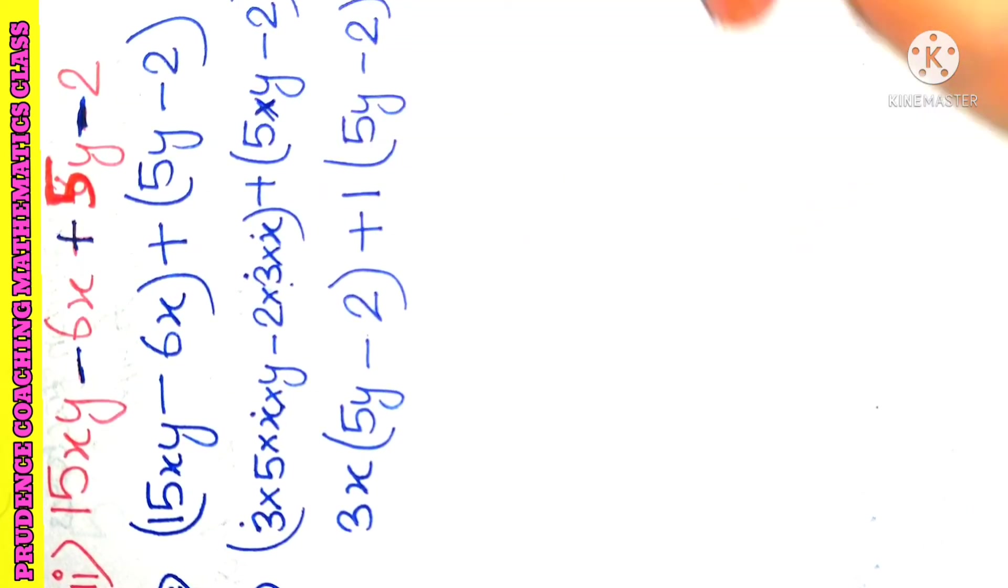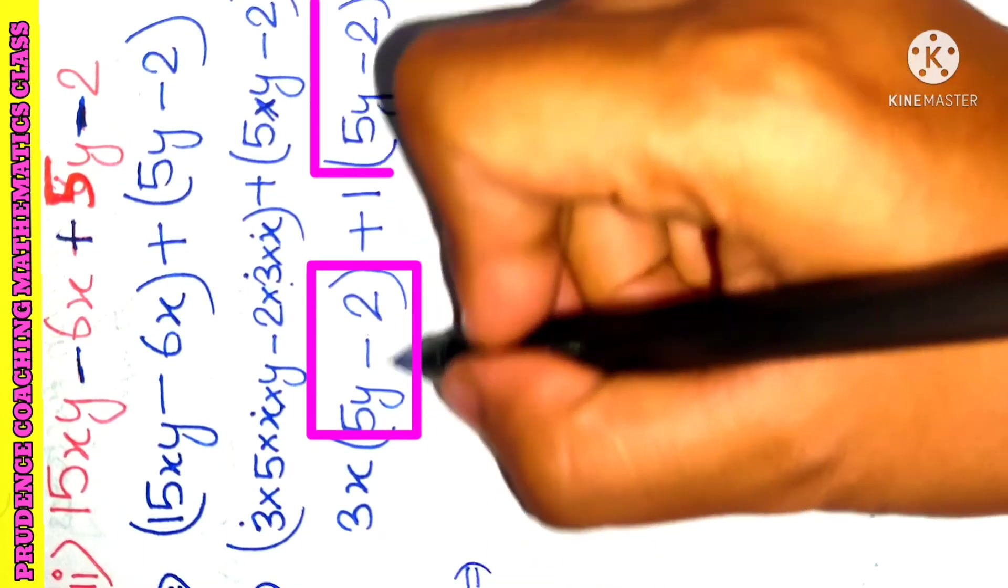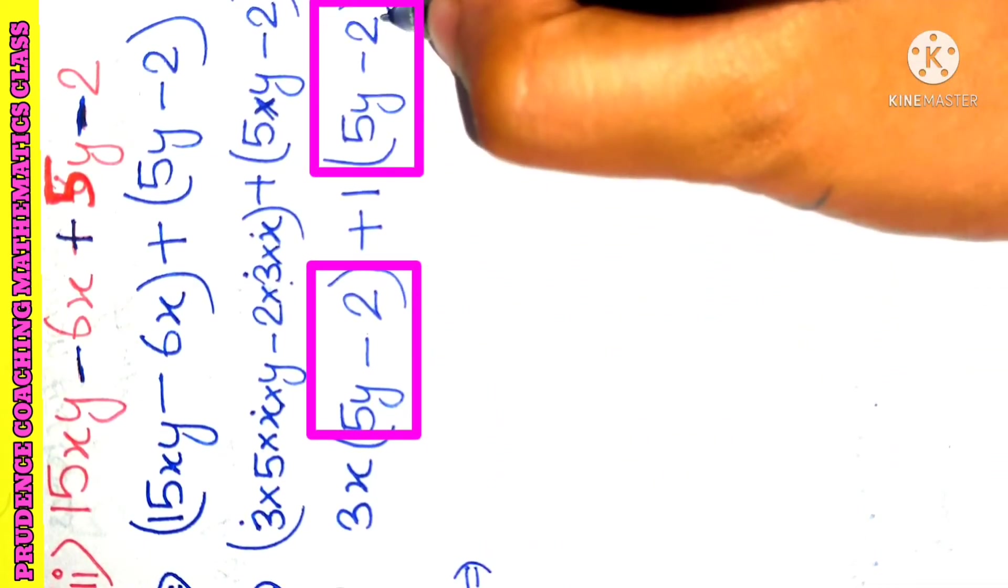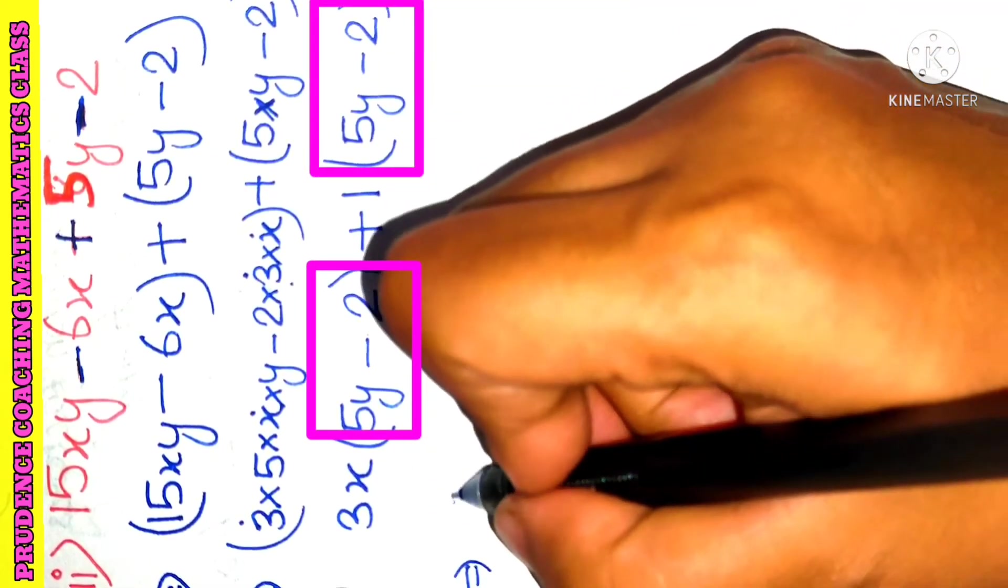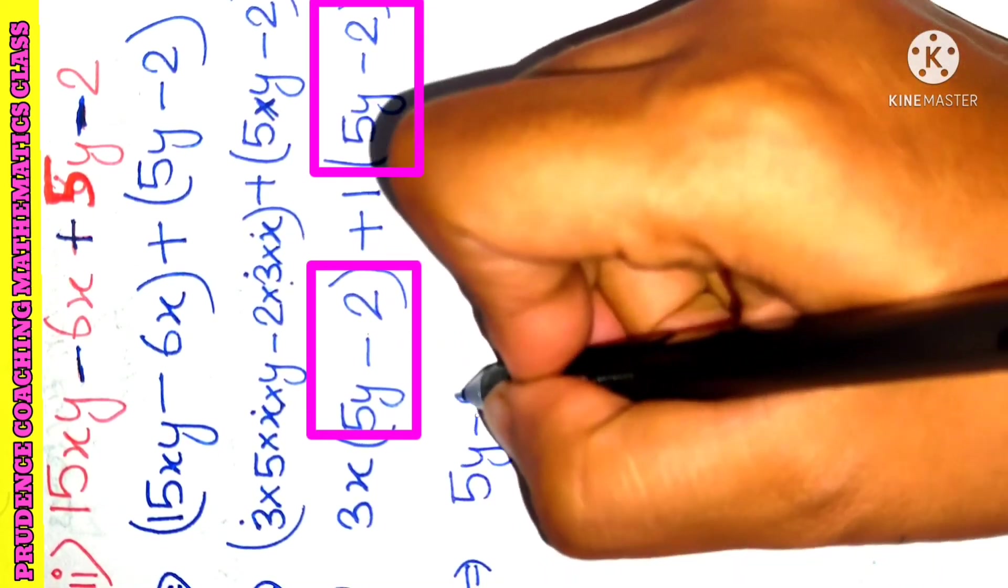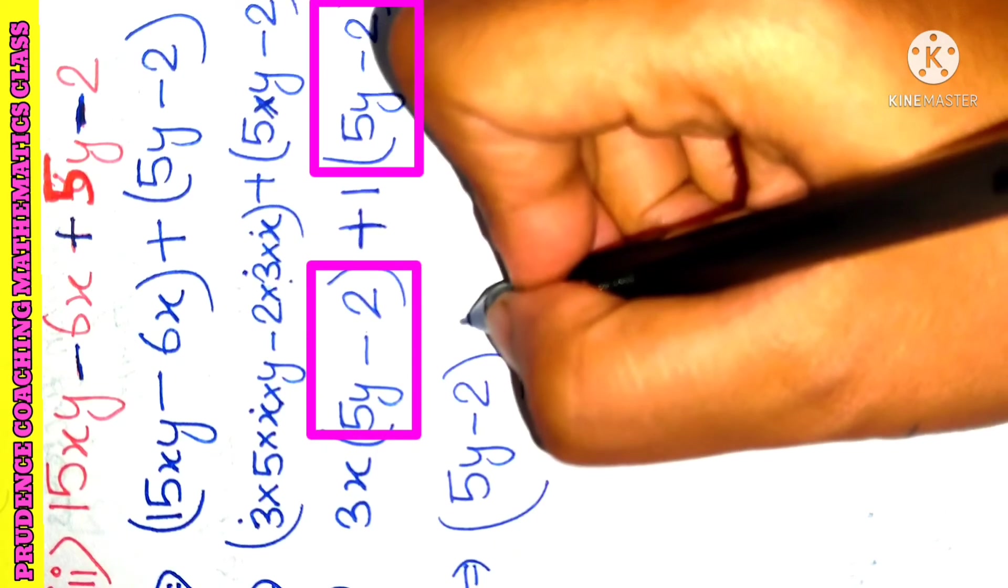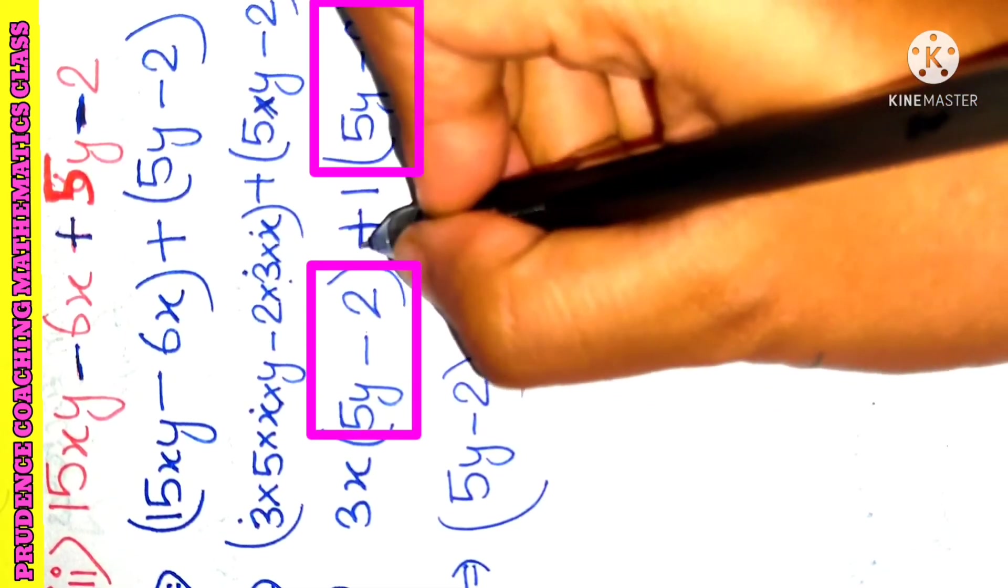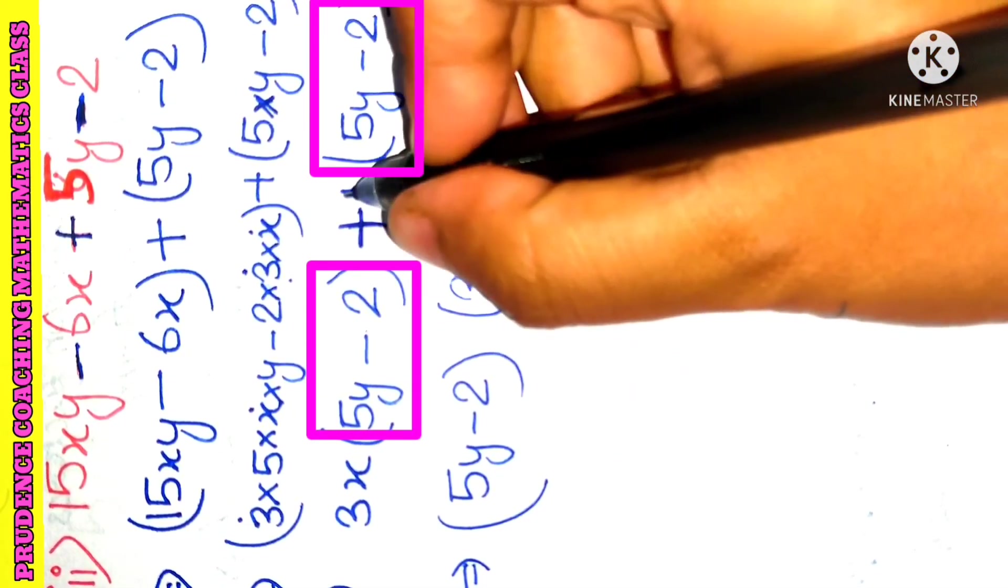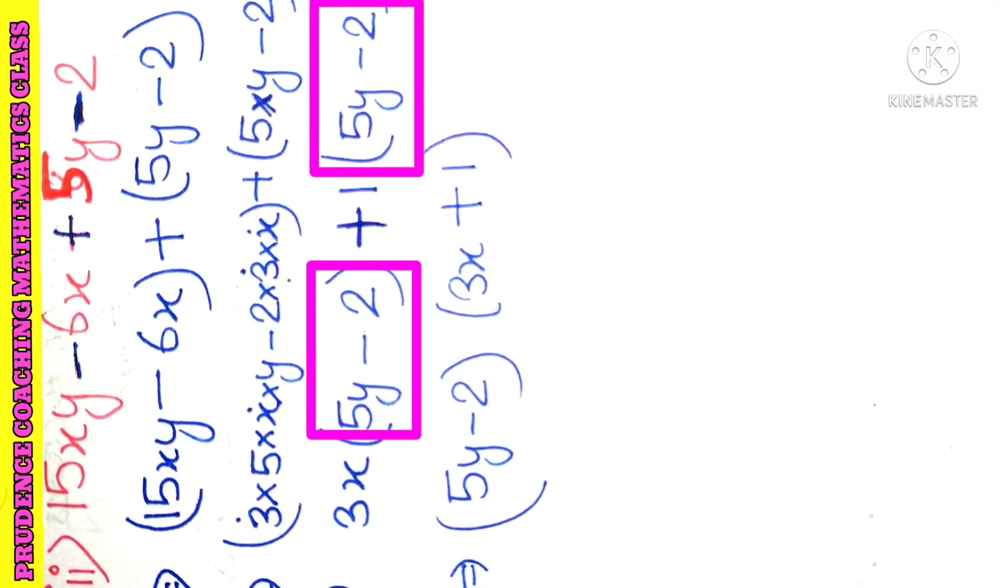So here, as you can see, here we have 5y minus 2, here also 5y minus 2. So we can take this one as common, 5y minus 2. So what will be left over here? Here is left over 3x, and here we have plus, and here we have 1. So this is our final answer.